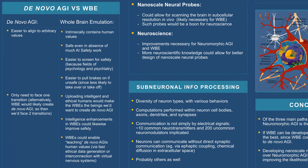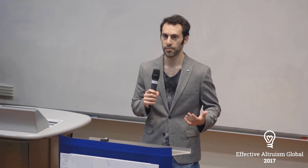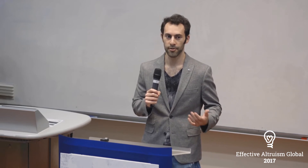The third path is whole brain emulation. The idea is to emulate a specific human brain — you take someone's brain, scan it, translate the scan into a model, run the model on a computer, and presumably give it a virtual body it can control and a virtual world to interact with. If done correctly, the emulation would be assumed to act similarly to how the human whose brain was scanned would act in a similar situation.